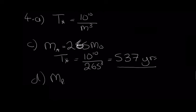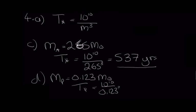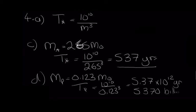Finally, Proxima Centauri, the closest star to the Sun, has a mass of just 0.123 solar masses. Its lifetime = 10¹⁰ / (0.123)³ = 5.37×10¹² years, which equals 5,370 billion years. Very low-mass stars will essentially burn forever — Proxima will live for over 500 times longer than our Sun, which has a lifetime of just 10 billion years.